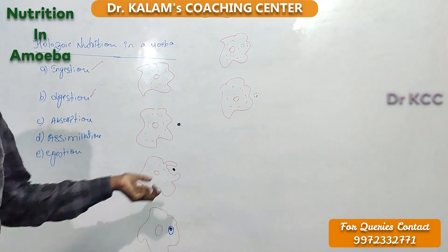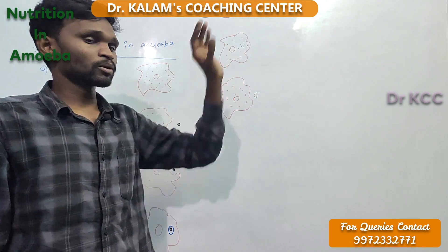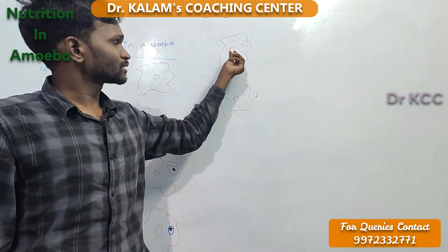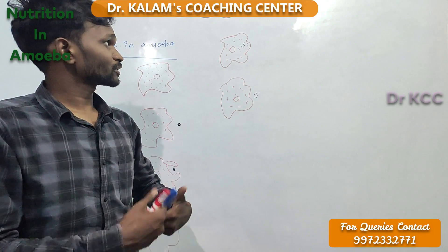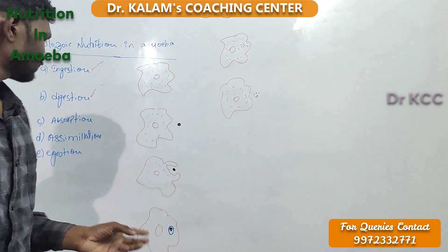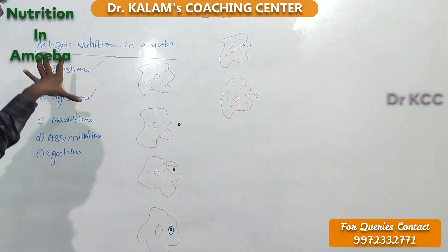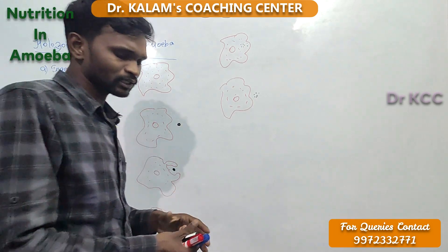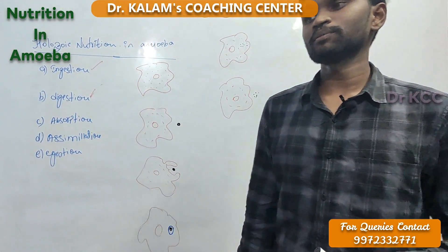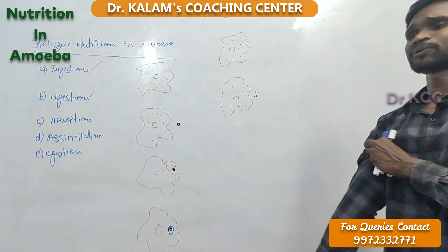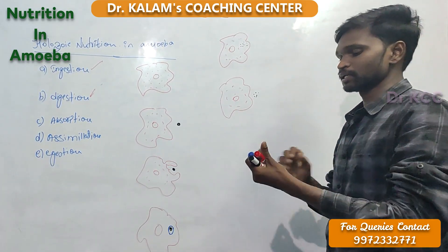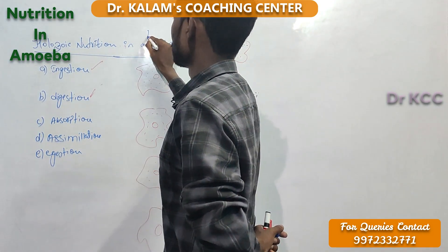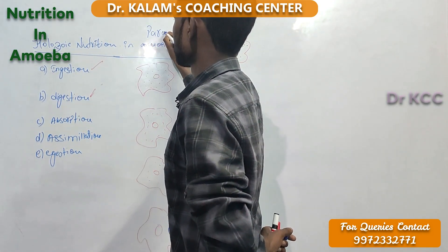The undigested food is thrown out — that process is called egestion. The digested food is absorbed for energy consumption, for production of energy, for survival. Any organism that gets nutrition through these five steps follows holozoic nutrition. Amoeba is the key example.